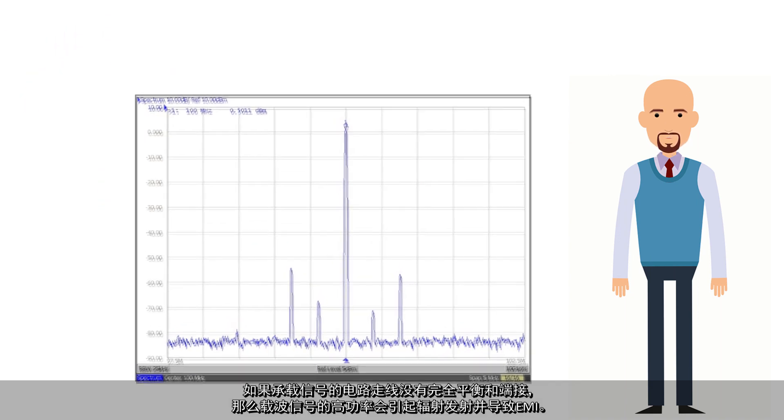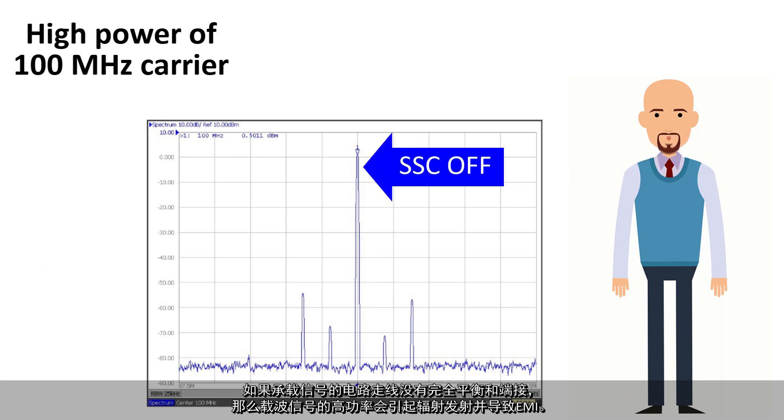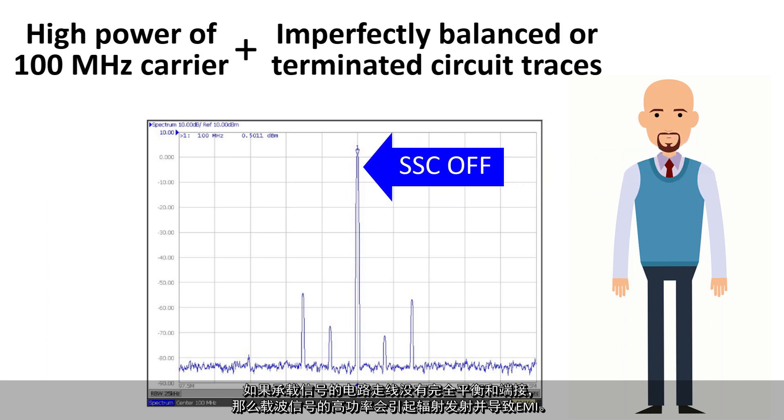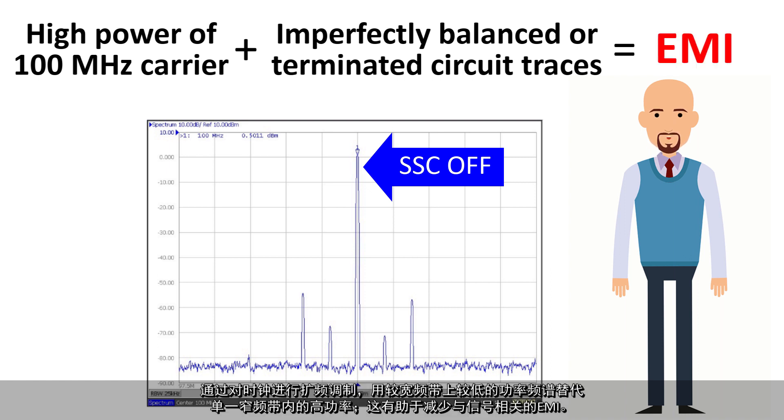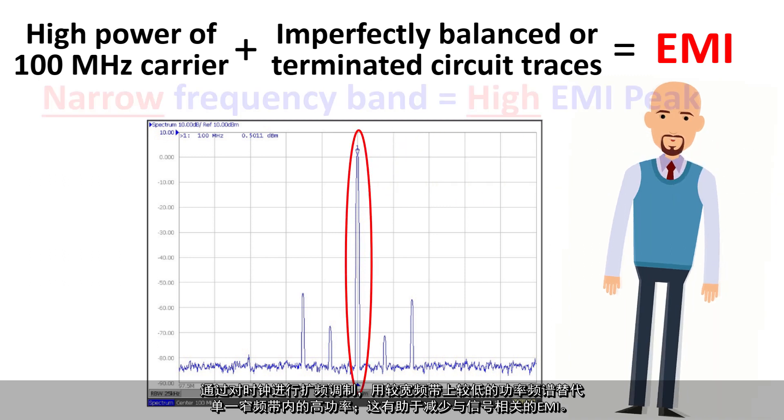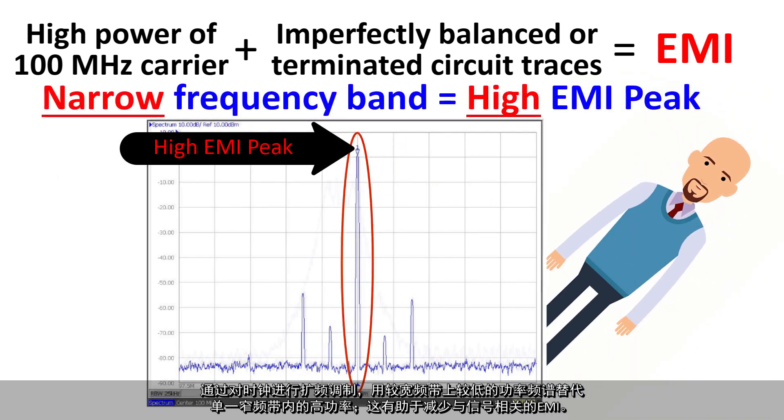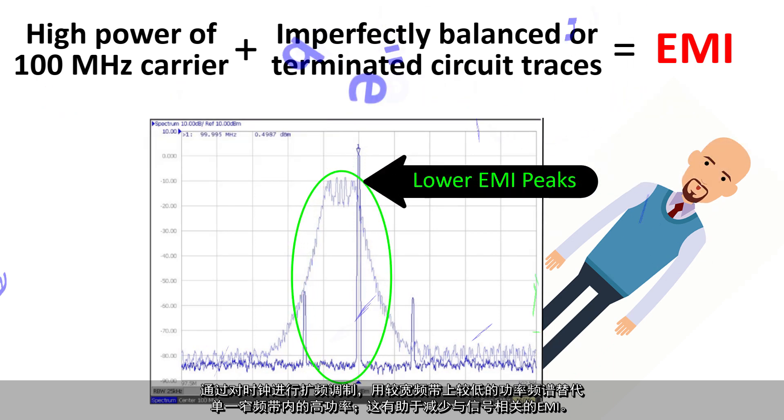The high power of the carrier signal can result in radiated emissions and cause EMI if the circuit traces carrying the signals are not perfectly balanced and terminated. By modulating a clock with spread spectrum, high power in a single narrow frequency band is replaced with lower power spread over a wider band.